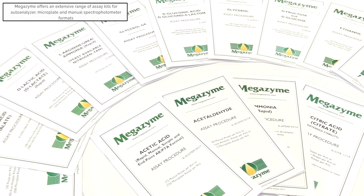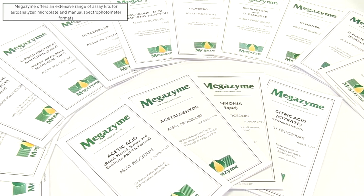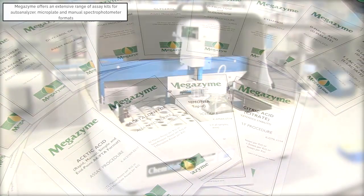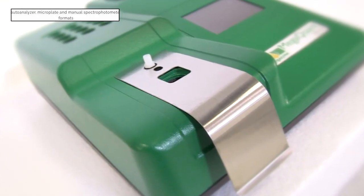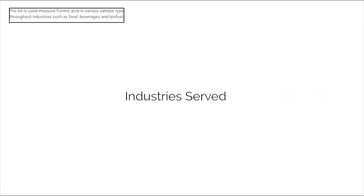Megazyme provides an extensive range of assay kits for use in various assay formats, including autoanalyzer, microplate and manual spectrophotometer. The formic acid test kit is a simple method for the rapid, reliable measurement and analysis of formic acid in foods.